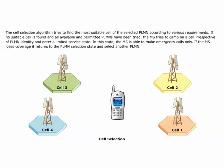The MS tries to camp on a cell, irrespective of PLMN identity, and enter a limited service state. In this state, the MS is able to make emergency calls only. If the MS loses coverage, it returns to the PLMN selection state and selects another PLMN.